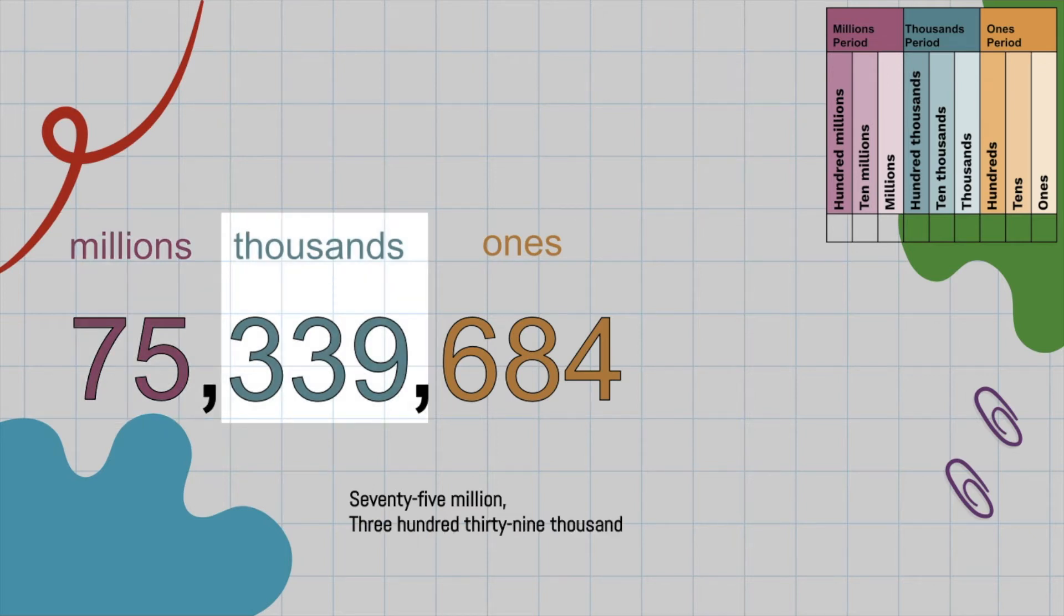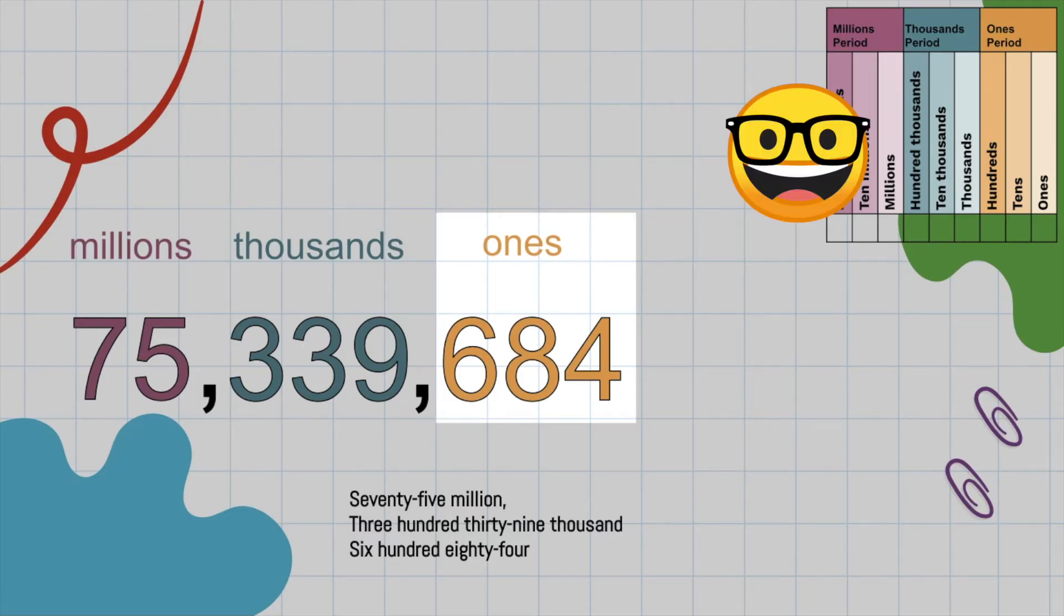Now when we move to this number, we already know the first name, 339, and then the last name, 1,000. So the full name, 339,000. And then this last one, first name, 684. Last name, well, it actually doesn't have a last name. When you get to the ones, then you're done.